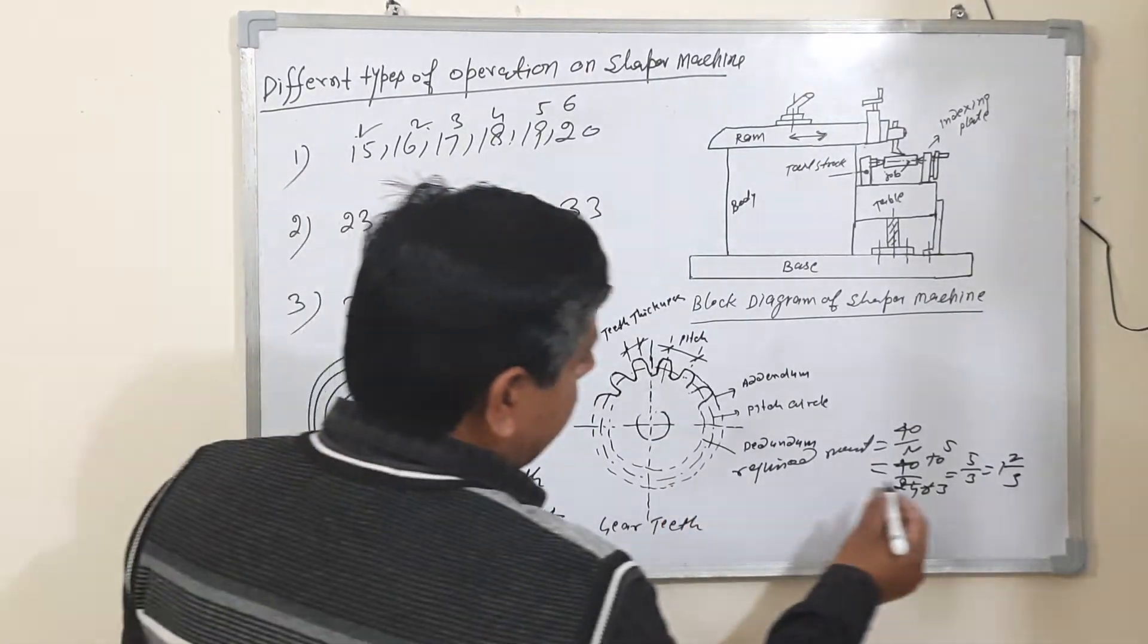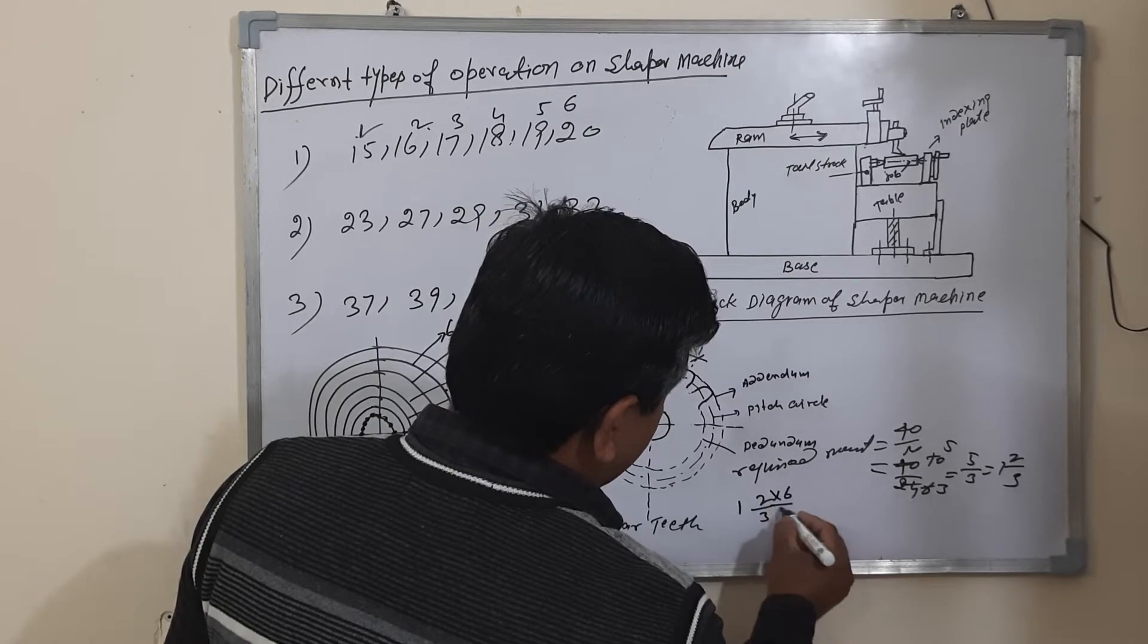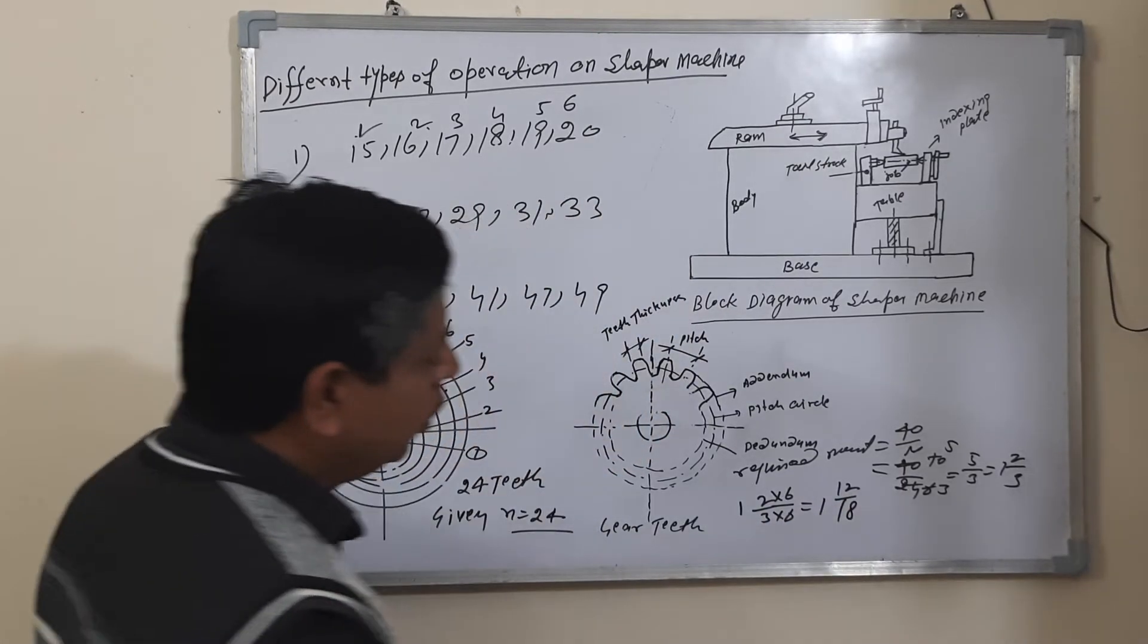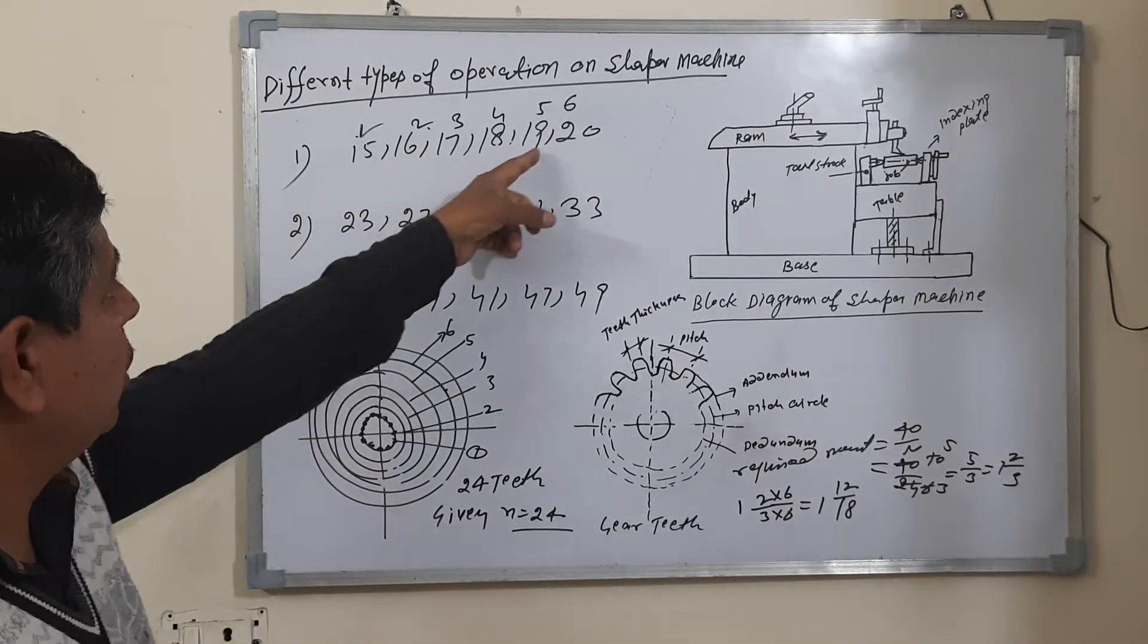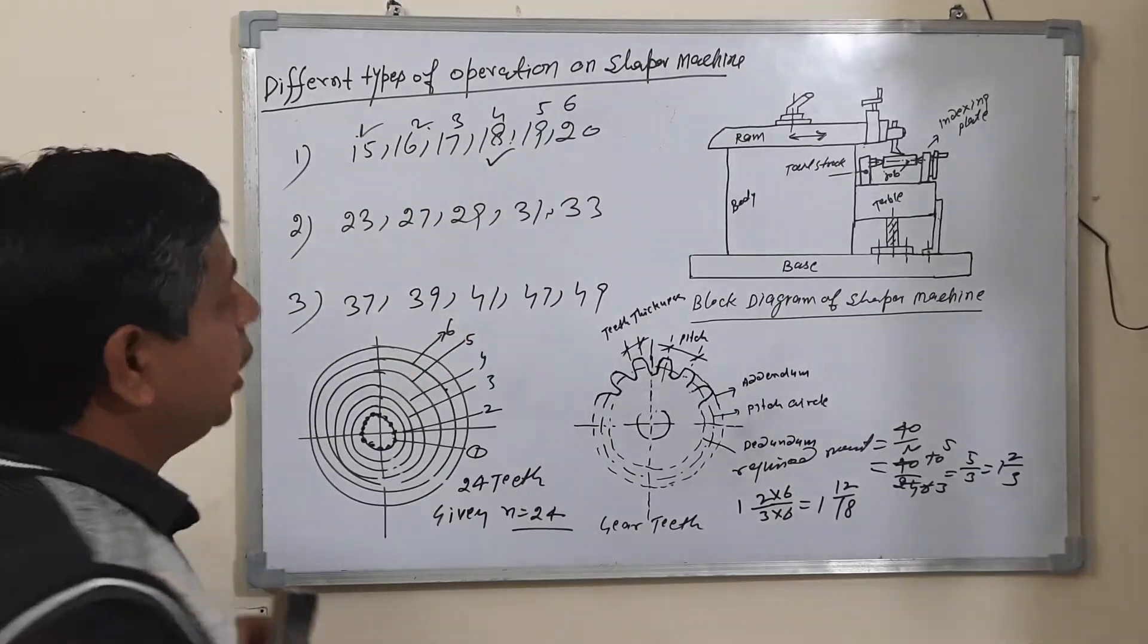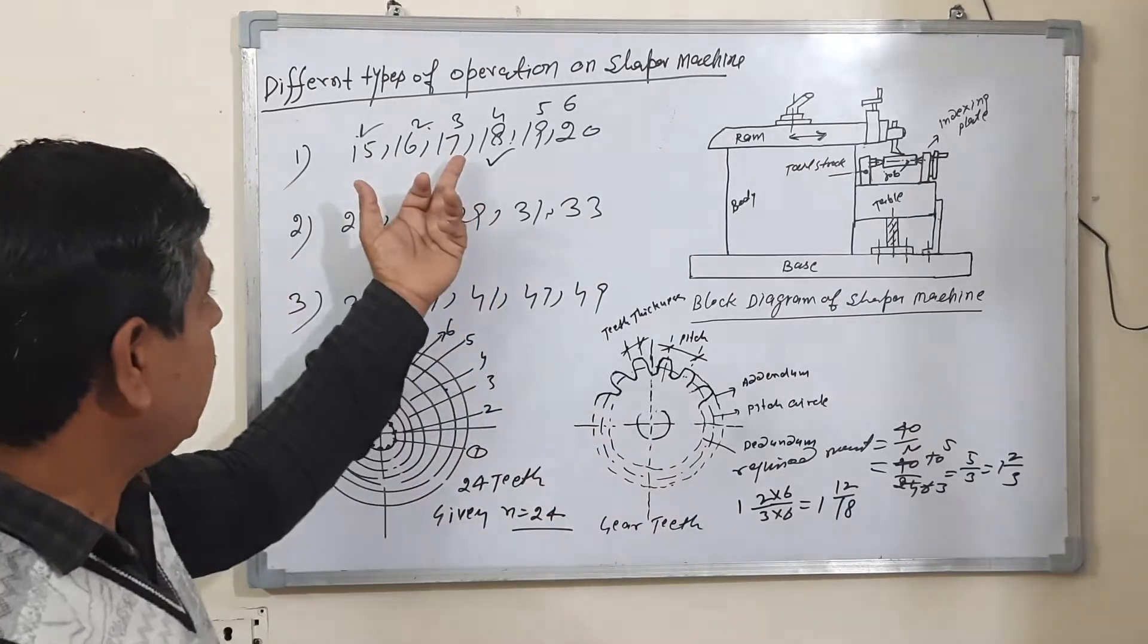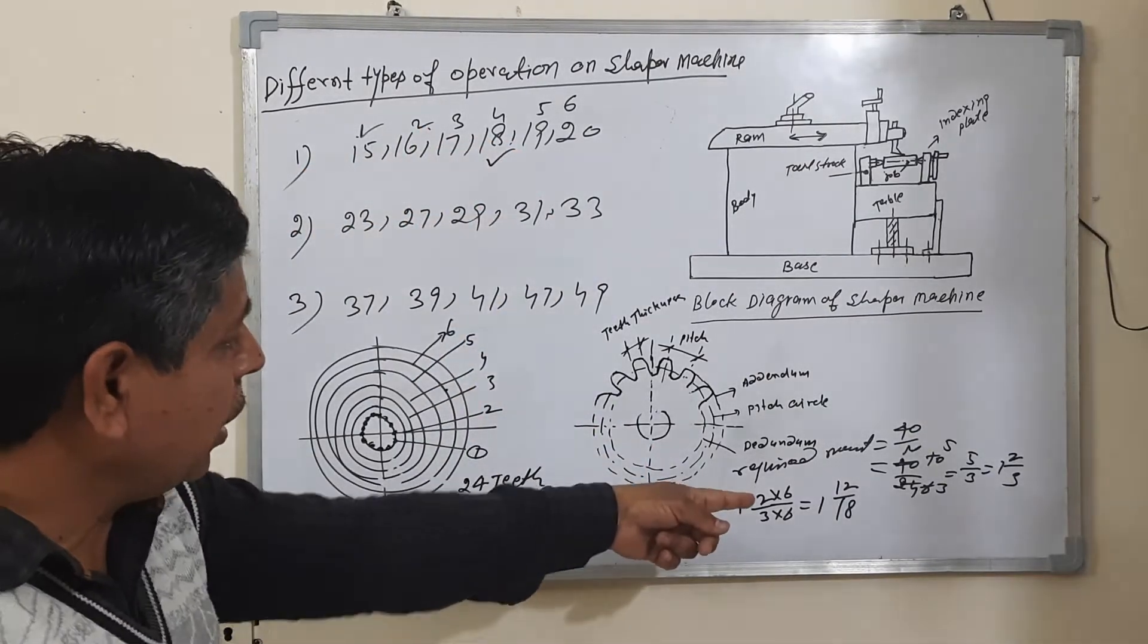So 1 and 2/3 - multiply by 6 and multiply by 6 gives 1 and 12 upon 18. So 18 number is coming with plate number 1. Plate number 1 has 18. So you cut the gear by selecting plate number 1.